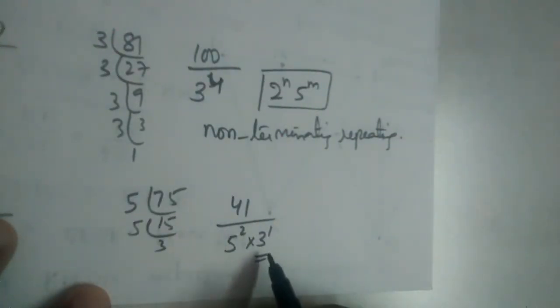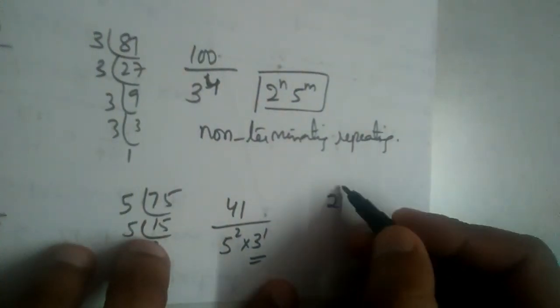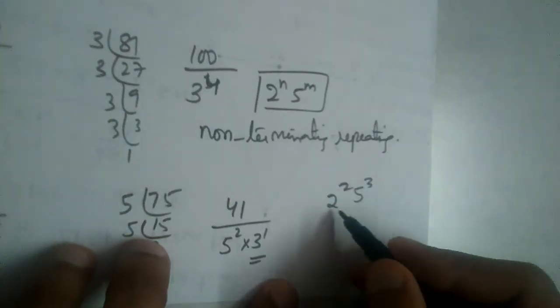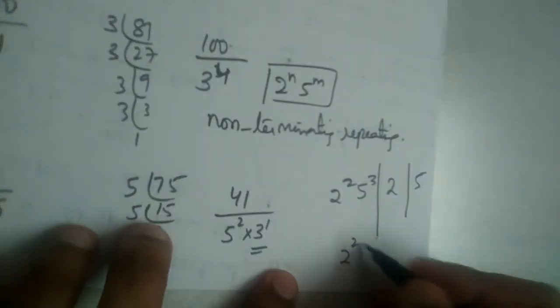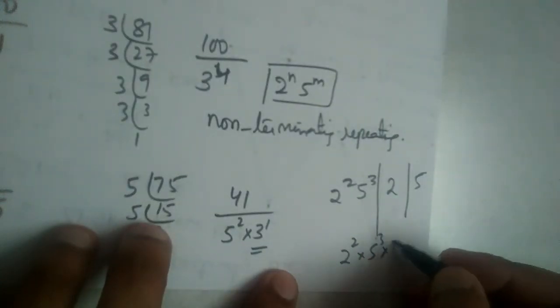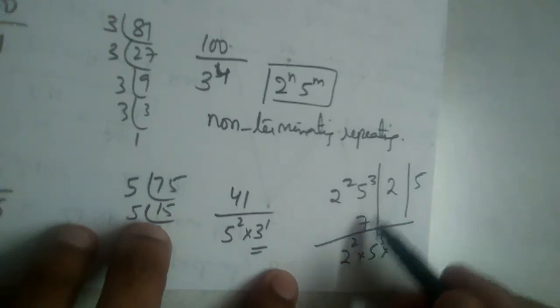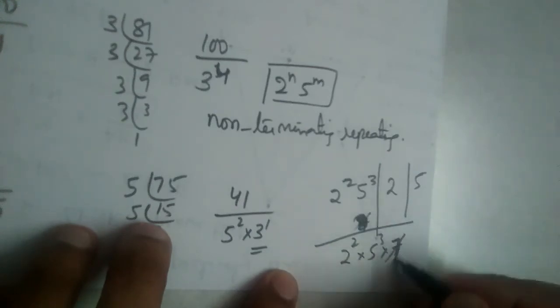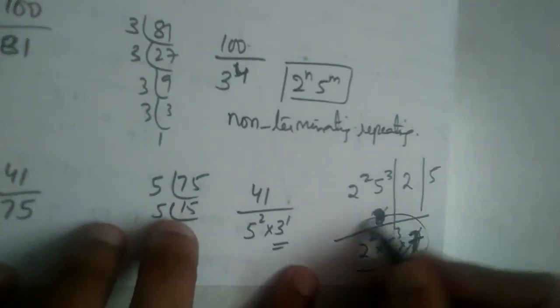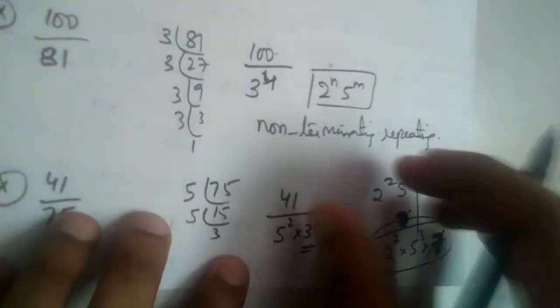See, we can have like this, or we can have only 2 or only 5. If we have 2 cube, 5 cube, and anything extra like 7, and that 7 has been not cancelled with the numerator—if we have 7 and 7 here, this will get cancelled. It will be terminating again. Suppose you don't have 7 here, this 7 will not get cancelled. In that case, this will be non-terminating repeating.